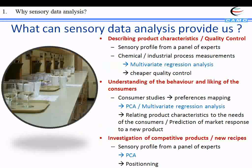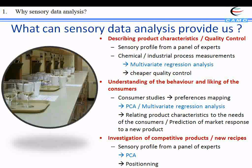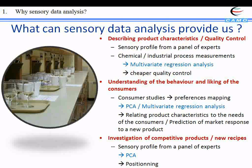What can we get from Sensory Data Analysis? There are three main things. The first is a description of product characteristics — usually we get a sensory profile from a panel of experts. We can also use those data for quality control, and one of the most popular uses is to measure chemical or industrial process data on the same product and use a regression method to create a model to predict the sensory profile. This makes for a cheaper quality control.